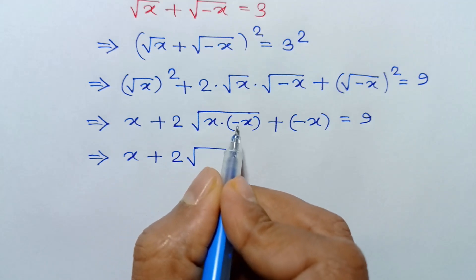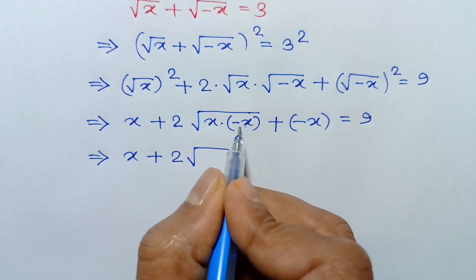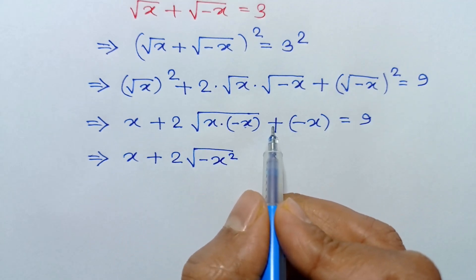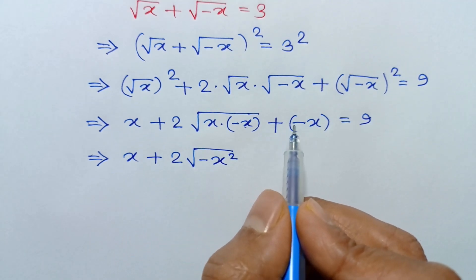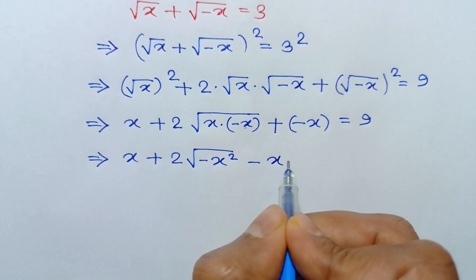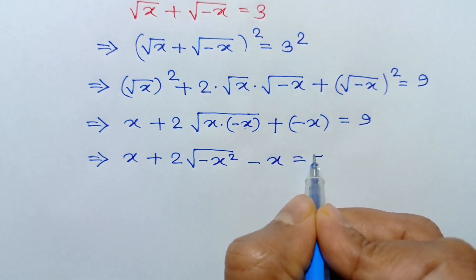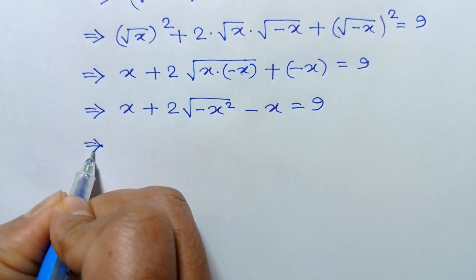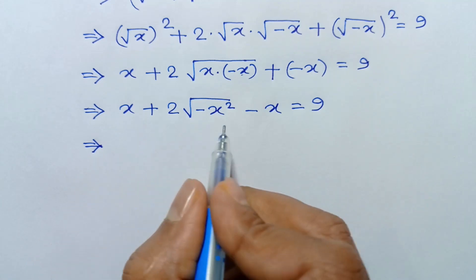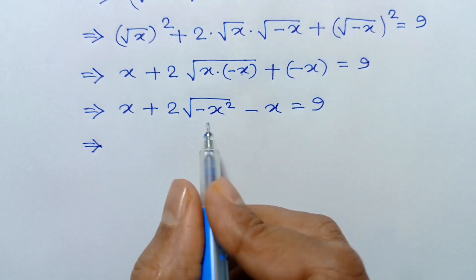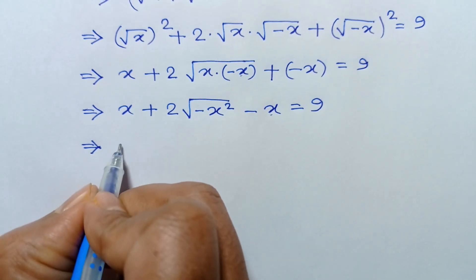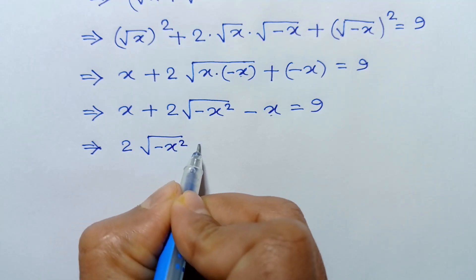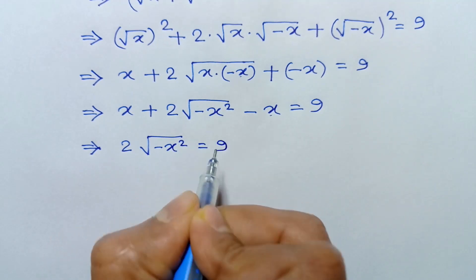So we have x plus two times square root of x times negative x, which gives square root of negative x squared, plus negative x, is equal to 9. The positive x and negative x cancel out, leaving 2 times square root of negative x squared is equal to 9.